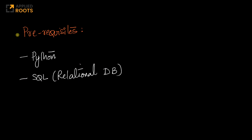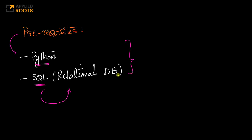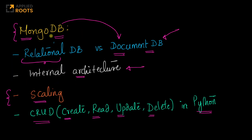For this live session, you obviously need to know Python programming because we will be using it extensively. We will also assume that you know SQL and the basics of relational databases — what is a table, what is a join, and how relational databases work internally. Having this context will allow you to easily understand MongoDB by focusing on the differences in data storage and indexing between relational and document databases.